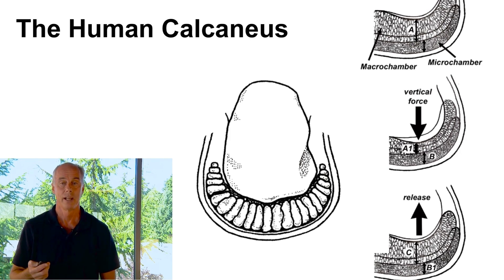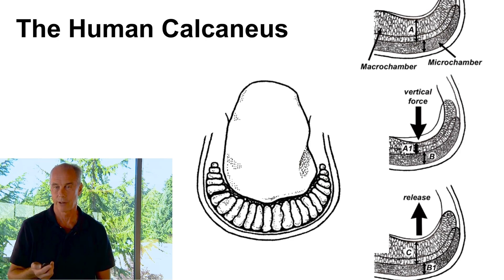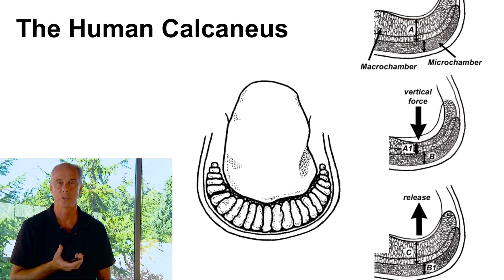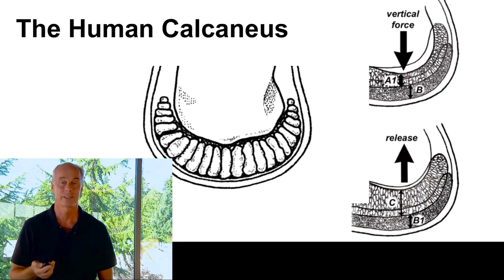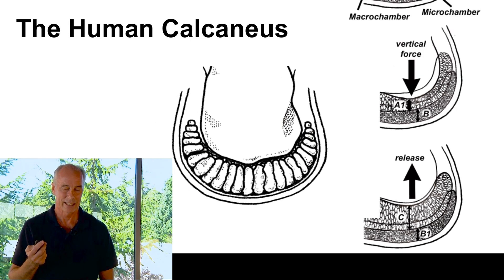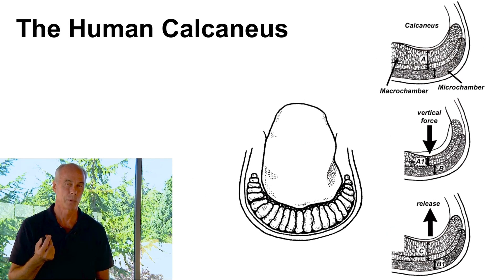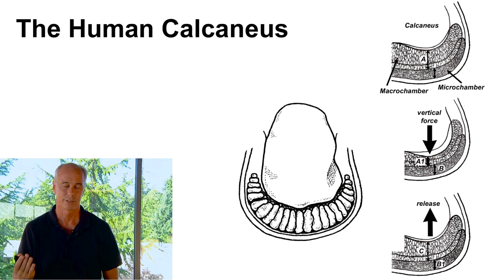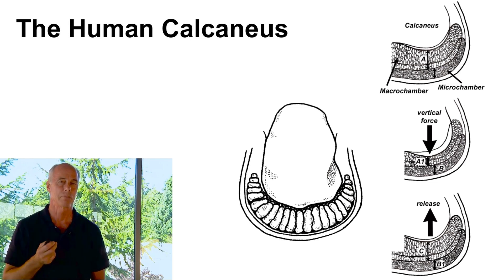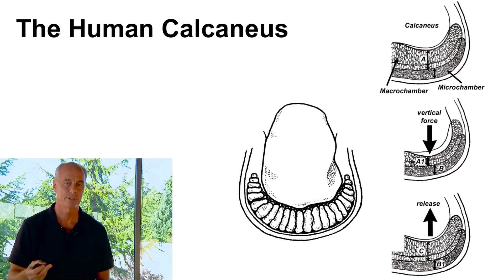Dissections of the calcaneal fat pad reveal two separate pads: a macro-chamber and a micro-chamber. The micro-chamber acts as a cup that holds the deeper macro-chamber. The macro-chamber deforms significantly and returns some of the energy; the micro-chamber stays intact. The macro-chamber even has a ligament on the medial side so that when your foot hits the ground and pronates, the medial restraining ligament keeps the fat pad in place. If we were really designed for midfoot strike patterns, we wouldn't have that fat pad anchored down on one side.